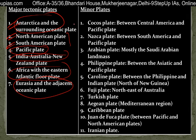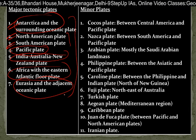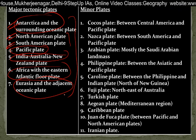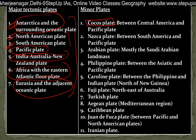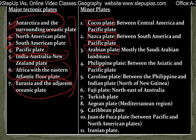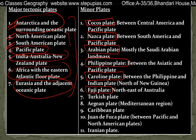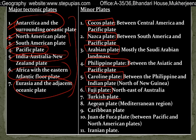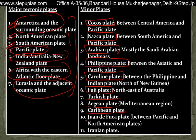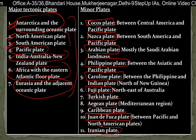The minor plates include: Cocos plate, Nazca plate, Arabian plate, Philippines plate, Caroline plate, Fiji plate, Turkish plate, Asian plate, Caribbean plate, Juan de Fuca plate, and Iranian plate.